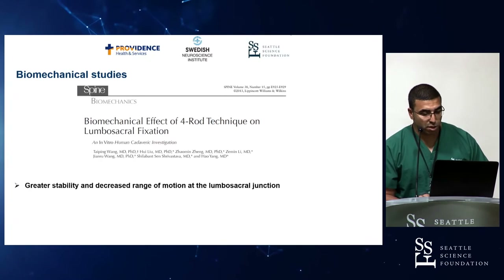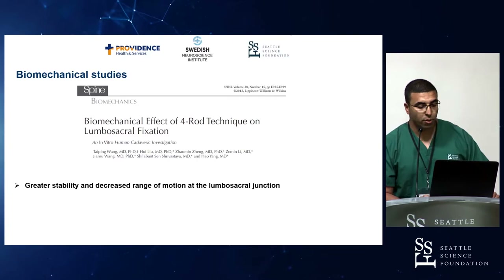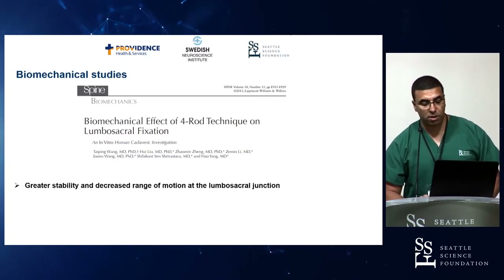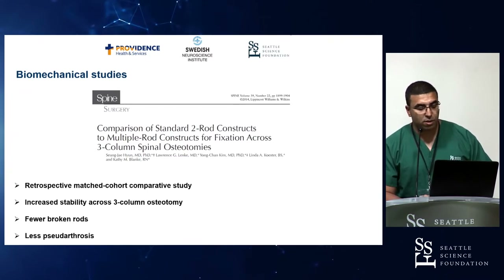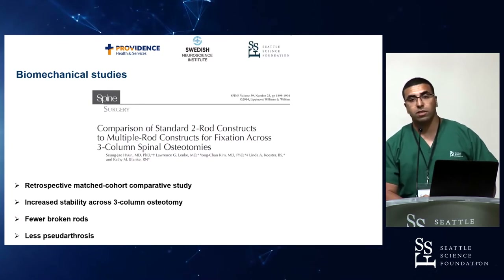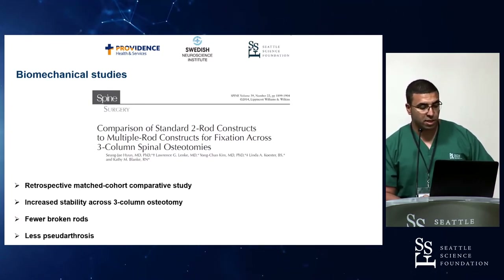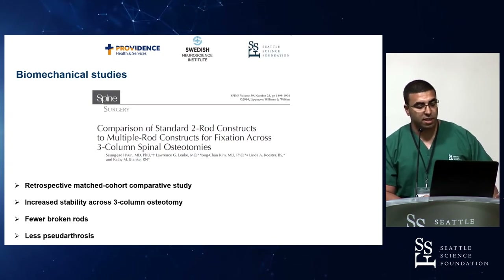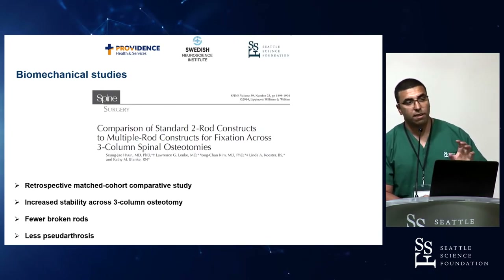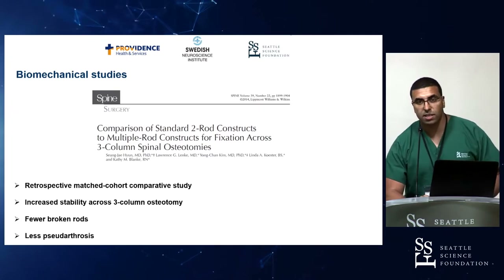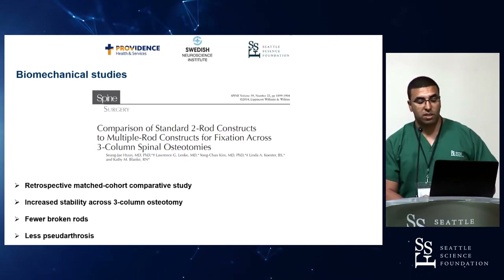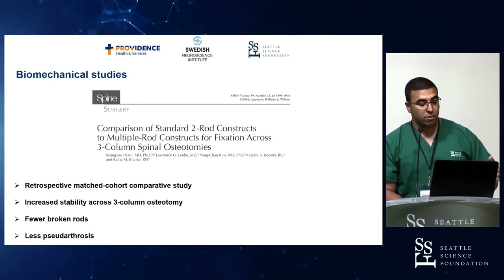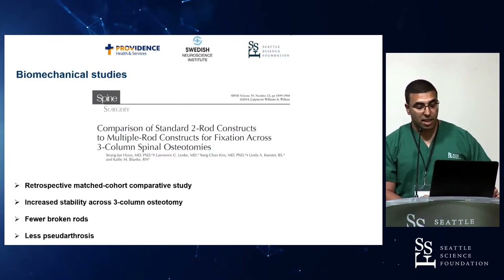Another study published by Wang in 2013 showed similar results with greater stability and decreased range of motion at the lumbosacral junction, also in comparison to a two-rod construct. A further biomechanical study compared a standard two-rod construct to multiple rod constructs, including three-rod and four-rod configurations. One of the few clinical studies — a retrospective matched cohort comparative analysis targeting three-column osteotomy — showed with a two-year follow-up increased stability across the three-column osteotomy, with significantly fewer broken rods and less pseudarthrosis rate.